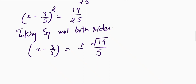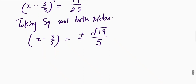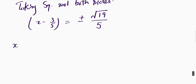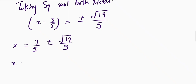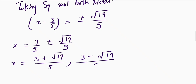From here we get two values of x. x equals 3 by 5 plus or minus square root of 19 by 5. So the two values are: (3 plus square root of 19) divided by 5, and (3 minus square root of 19) divided by 5. These are the two values of x.